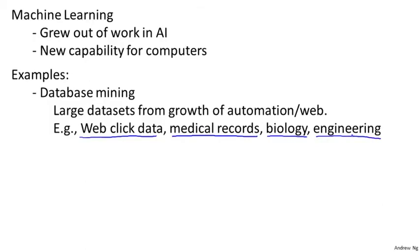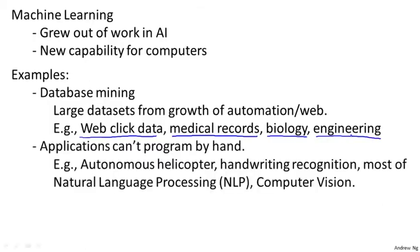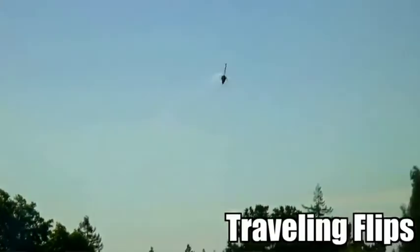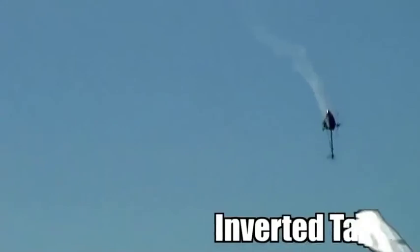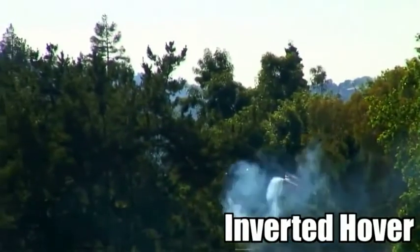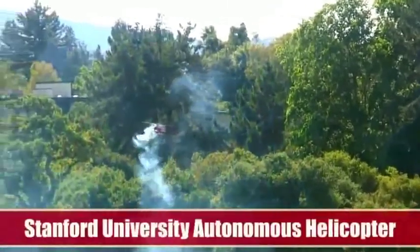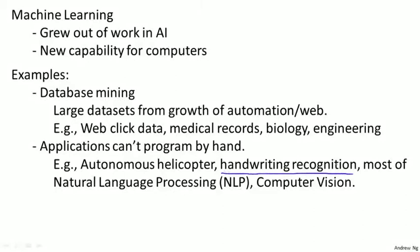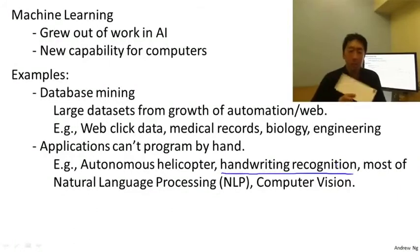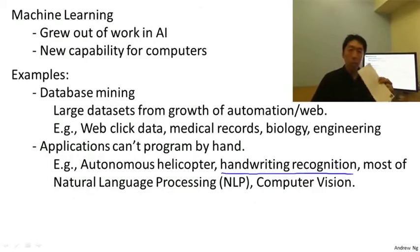A second range of machine learning applications is ones that we cannot program by hand. For example, I've worked on autonomous helicopters for many years — we just did not know how to write a computer program to make a helicopter fly by itself. The only thing that worked was to have a computer learn by itself how to fly. Handwriting recognition is another example: there's a learning algorithm that has learned how to read your handwriting, so it can automatically route an envelope, costing just a few cents to send something thousands of miles.